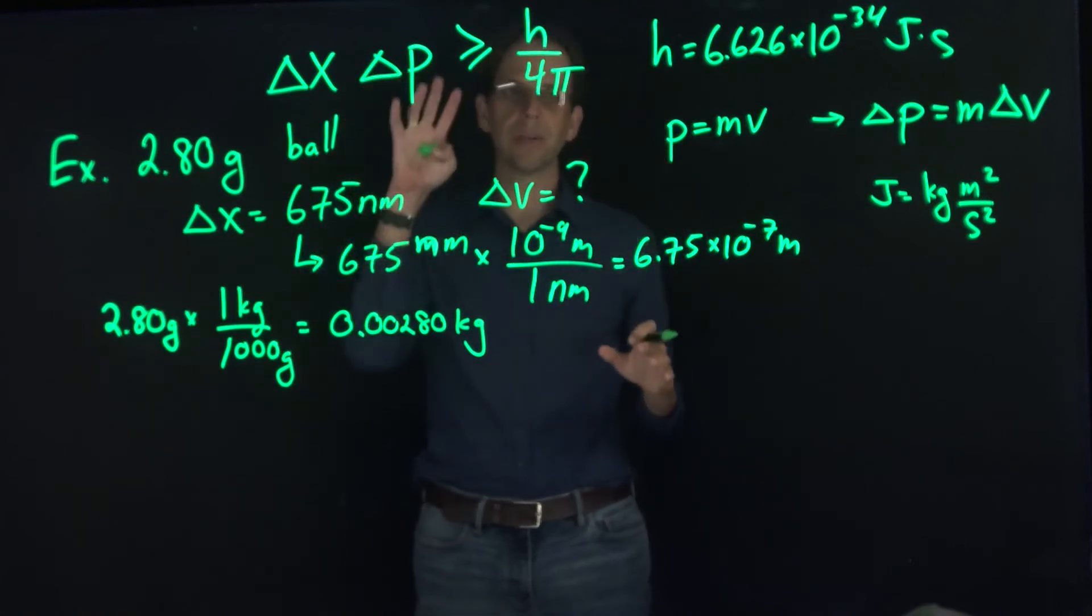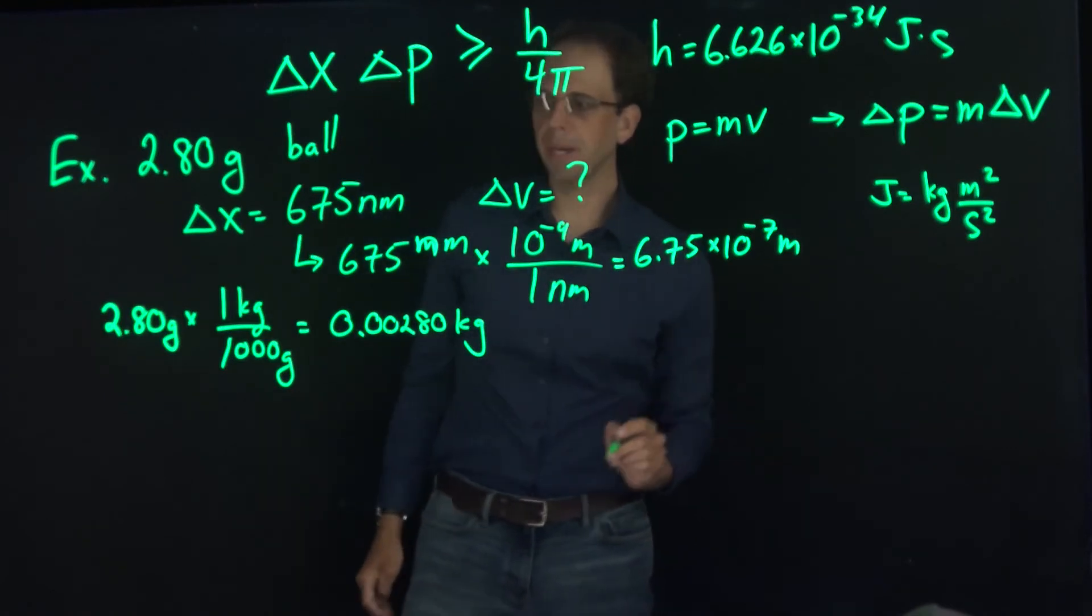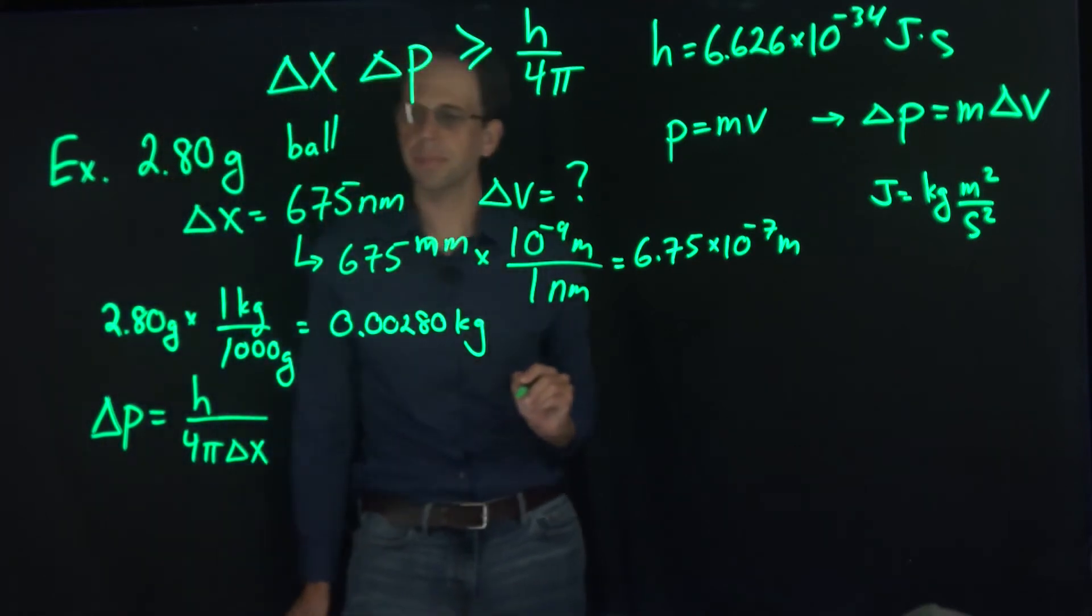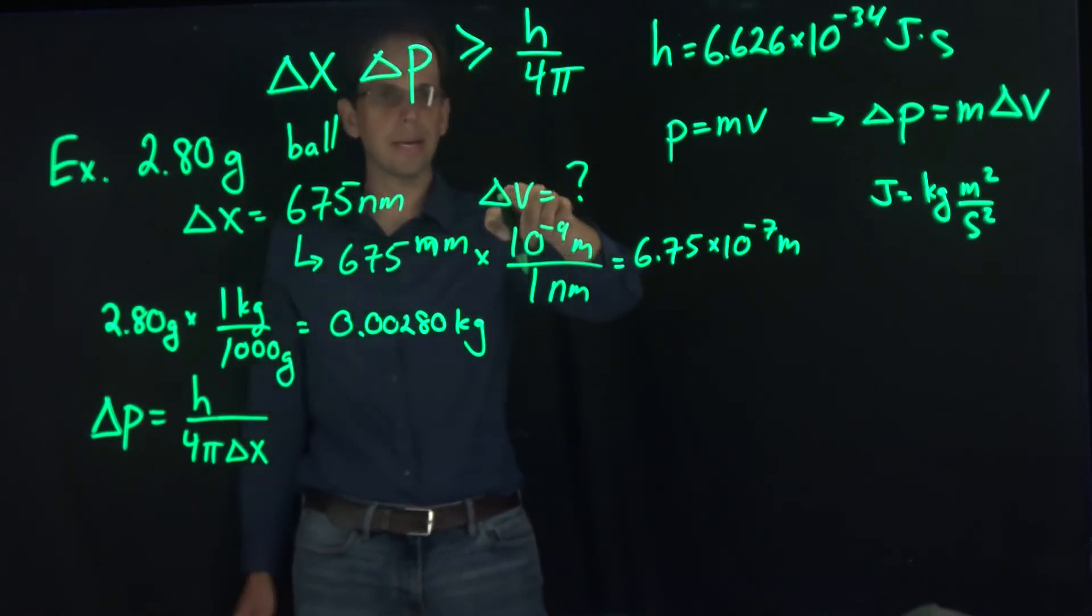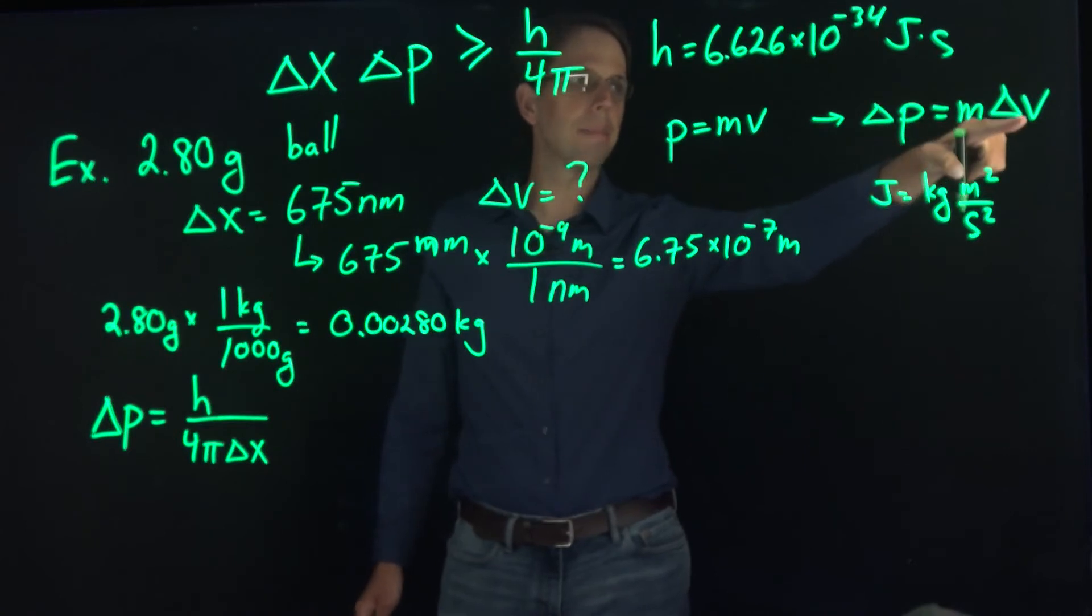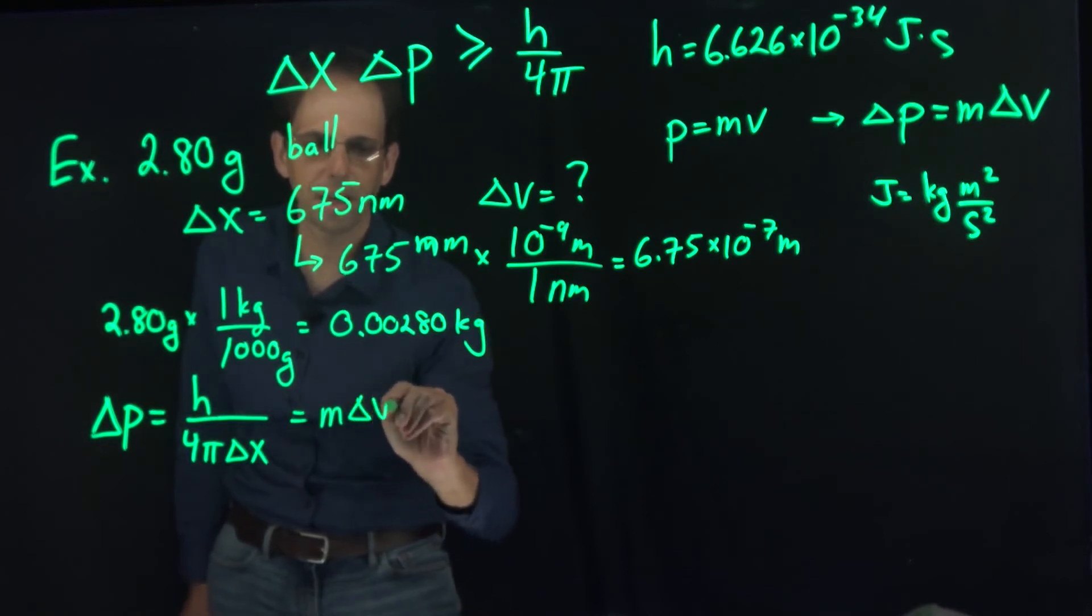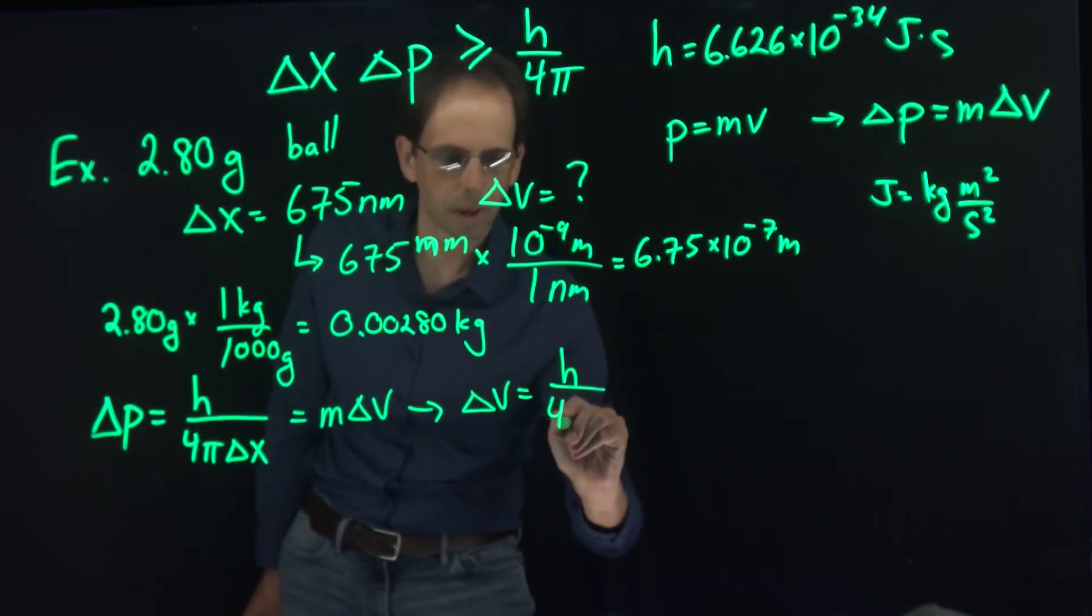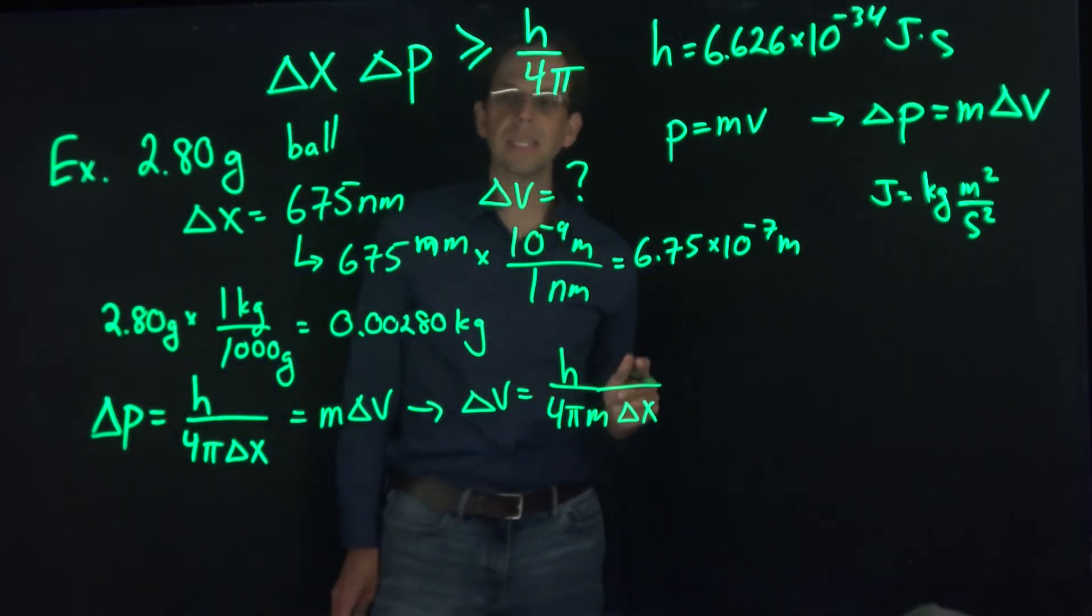So now we're ready to figure out the uncertainty in our velocity. First, I'm going to solve for the uncertainty in P. That is going to be equal to h over 4π times the uncertainty in X. Then, because we're actually interested in the uncertainty in velocity, I want to replace ΔP with m ΔV and solve for ΔV. So I get ΔV equals h over 4π mass times the uncertainty in X. So that's my working expression.